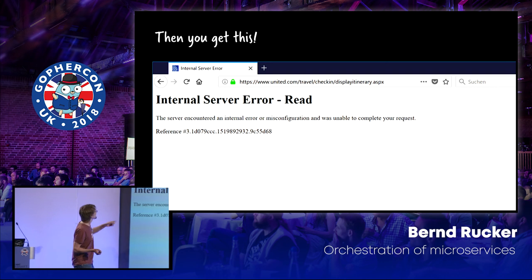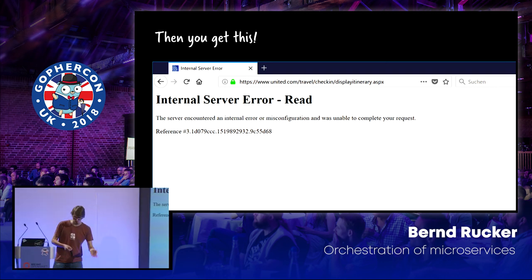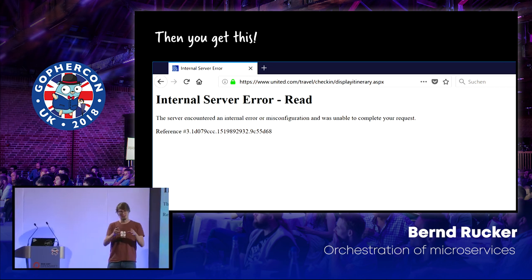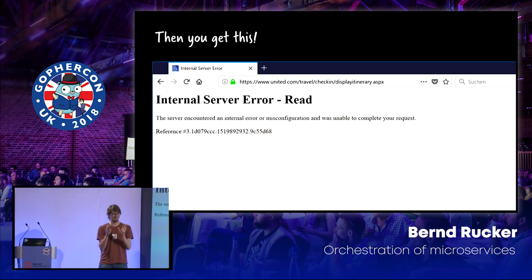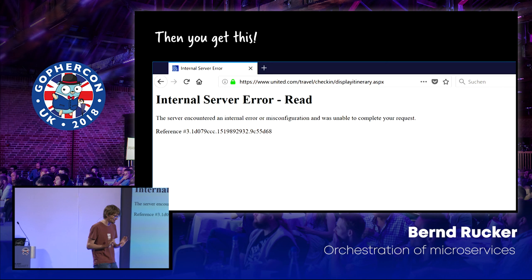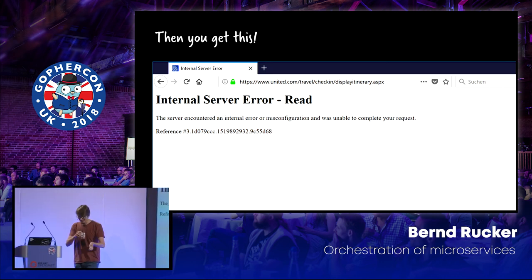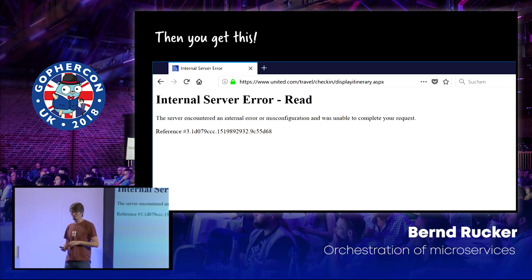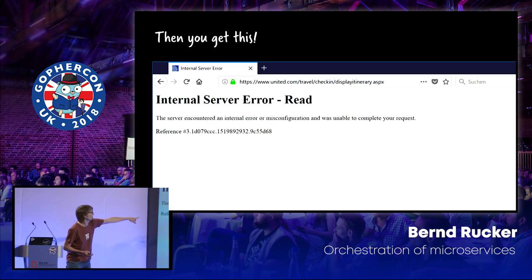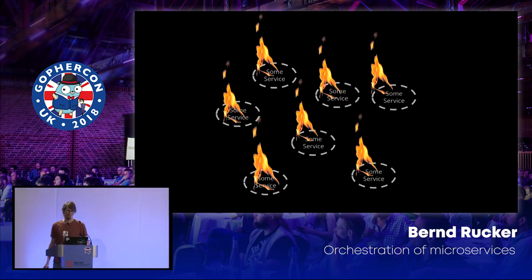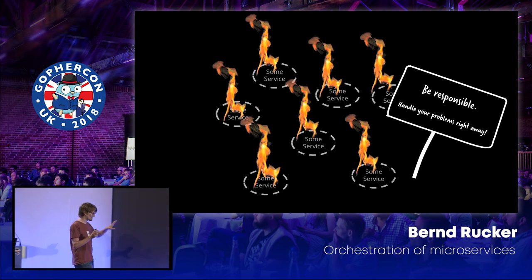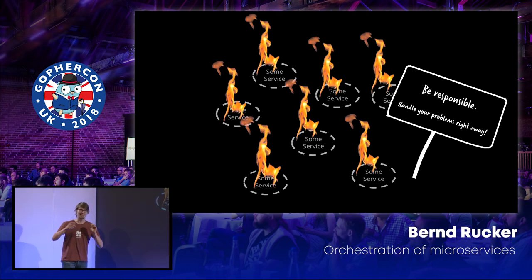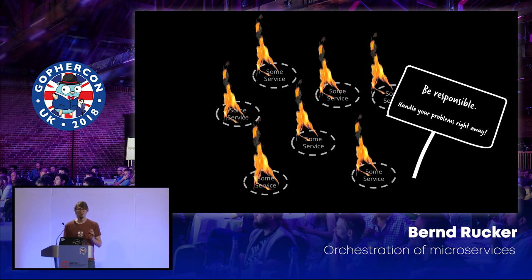I have a screenshot from United — a flight from New York back to Europe — showing a raw 500 error on their check-in app. Only United so far had a really raw 500. That's really bad. You shouldn't have that. So be responsive: as soon as you develop one service, think about this situation, think about how to handle these kind of errors. Ignorance can be a strategy; re-throwing, normally not.